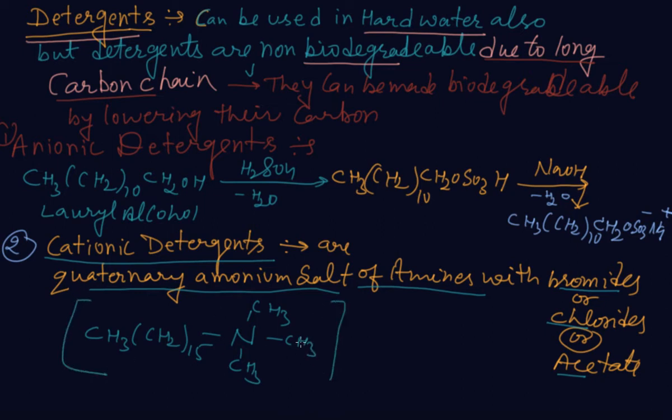So this is what the cationic detergents. And you know very well that amine can have four valences by using its lone pair. Cationic detergents have germicidal properties, means that it can kill germs.